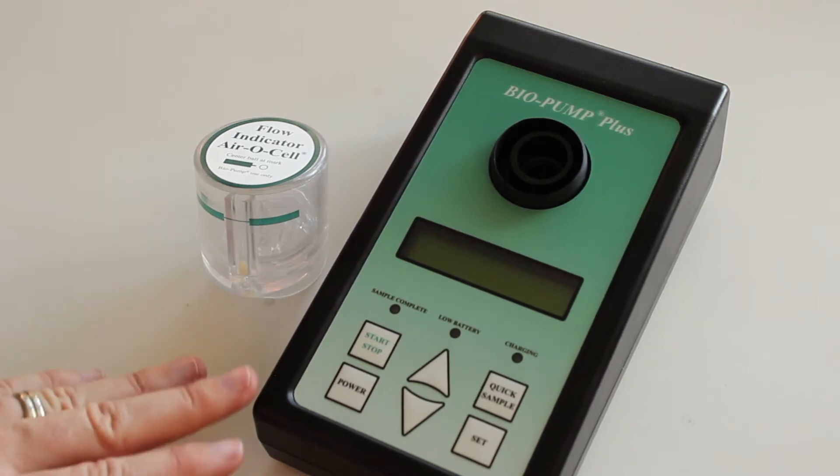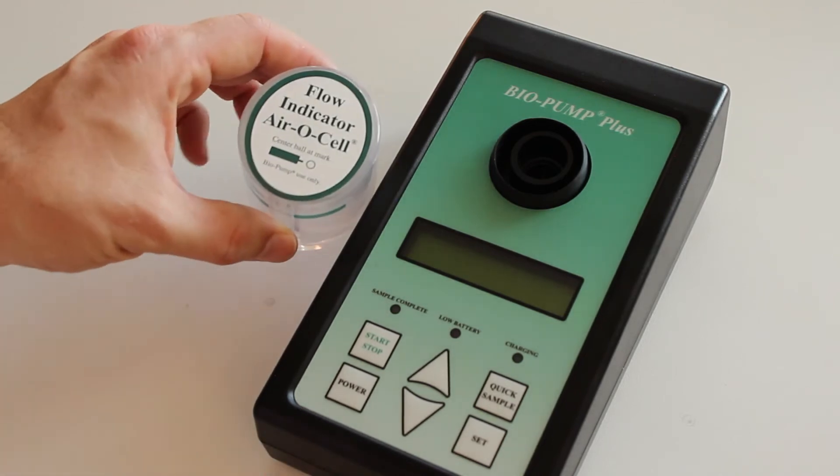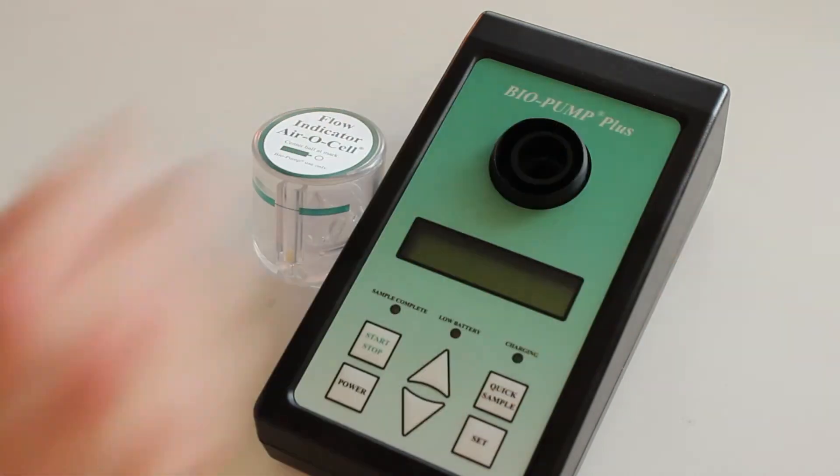You can use this for your aerosols, Allergenco Ds and such. To check it on site you're given this flow indicator aerosol which compensates for having the differential pressure of an aerosol on there so that you get the calibration right.